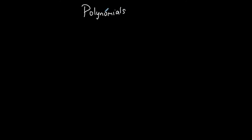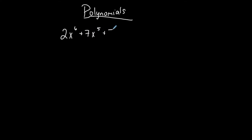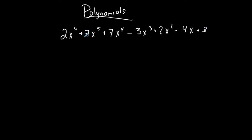This first video is going to talk about polynomials — what they are and how we can classify them. A polynomial function, expression, or equation can be represented in the following way. Here's an example: 2x to the 6th plus 7x to the 5th plus 7x to the 4th minus 3x to the 3rd plus 2x squared minus 4x plus 3. This is a very long polynomial, but it's a very good example of one.